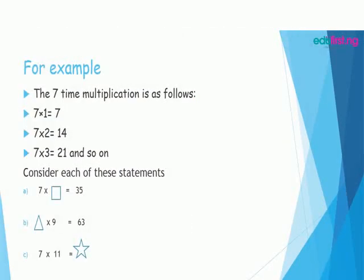The 7 times multiplication table is as follows: 7 times 1 equal to 7, 7 times 2 equal to 14, 7 times 3 equal to 21, and so on and so forth. Consider this statement: 7 times rectangle equal to 35, triangle times 3 equal to 21, 7 times 11 equal to star.